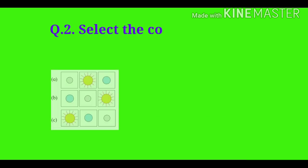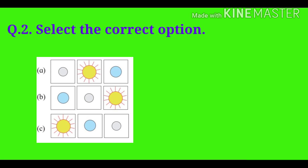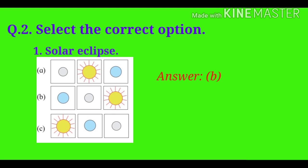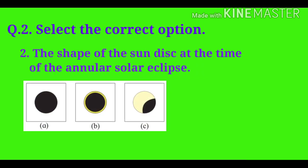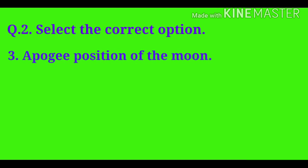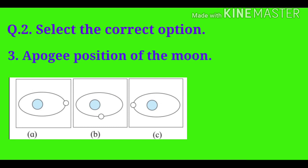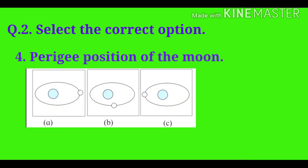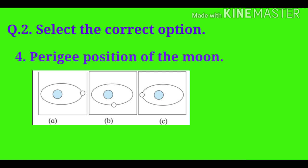Question number two: Select the correct option. First one — solar eclipse: Answer is B. Second one — the shape of the sun disk at the time of annular solar eclipse: Answer is B. Third one — apogee position of the moon: Answer is A. Fourth one — perigee position of the moon: Answer is C.